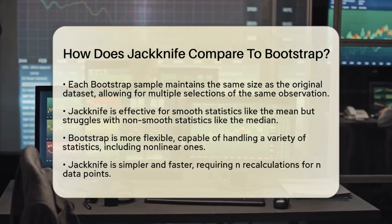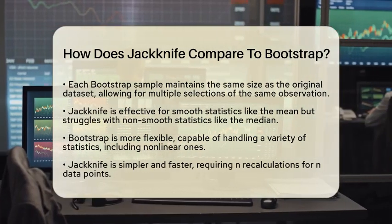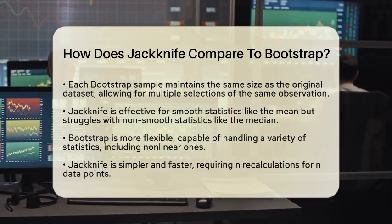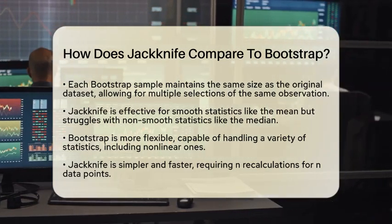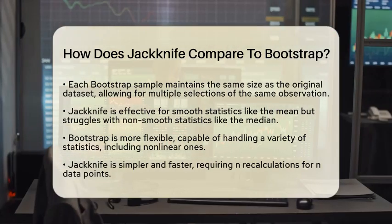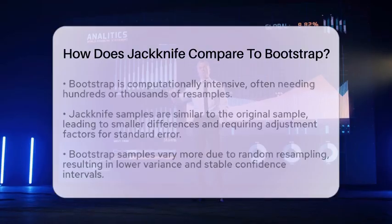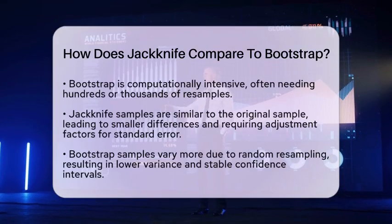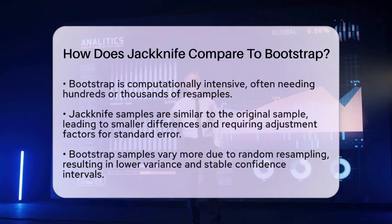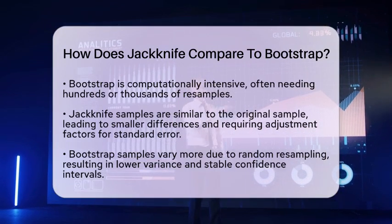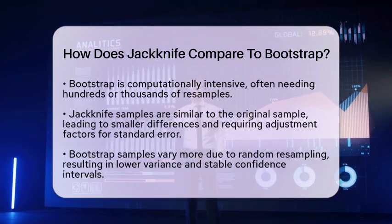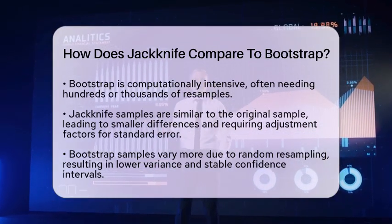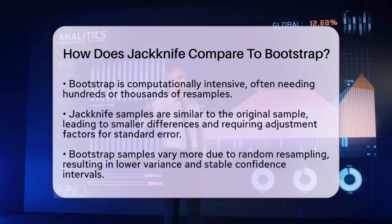In terms of computational aspects, Jackknife is simpler and faster. It only requires recalculating the statistic n times, where n is the sample size. Bootstrap, however, is more computationally intensive because it often requires hundreds or thousands of re-samples.